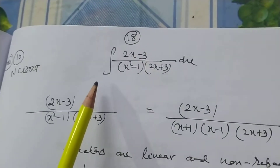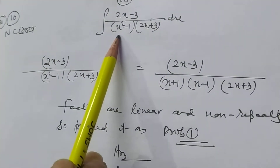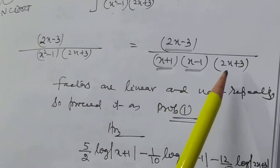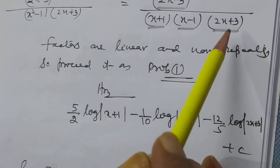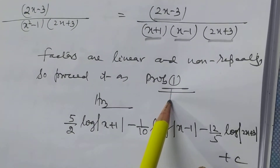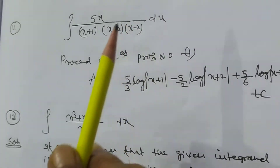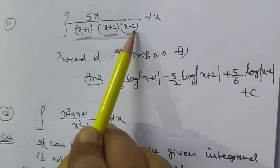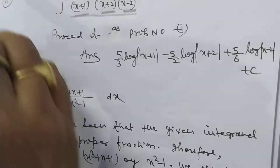Now I want to solve problem number 10 of NCRT and problem number 11 of study material: (2x - 3)/[(x² - 1)(2x + 3)]. This can be written as (2x - 3)/[(x + 1)(x - 1)(2x + 3)]. Here there are 3 linear factors, all non-repeating, so we can solve this problem as problem number 1. Problem number 11: ∫5x/[(x + 1)(x + 2)(x - 2)] dx — this also has 3 linear non-repeating factors, similar to problem numbers 10 and 1.